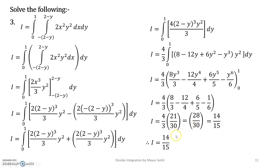Simplifying gives 4/3 × 21/30 = 28/30, and the final answer is i = 14/15. We have seen three examples. The most important point is that when limits are functions, you should not change the order of integration — perform it in the same order and solve carefully.